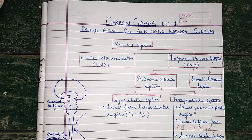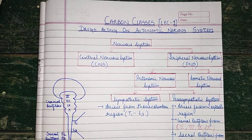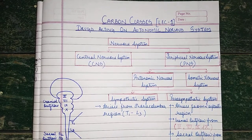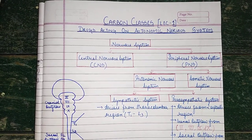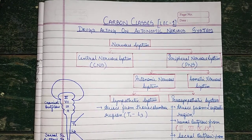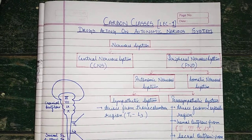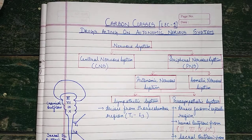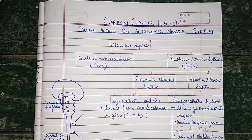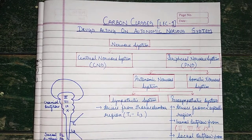Welcome back to the Carbon Classes channel. This is our first pharmacology video in which we are going to talk about the drugs acting on the autonomic nervous system. This is a large topic covering cholinergic, anticholinergic, and different types of drugs. In this lecture, we are going to talk about the nervous system, as a basic understanding of it is necessary before discussing drug effects.